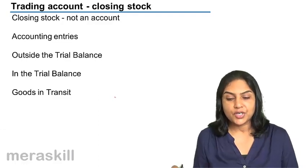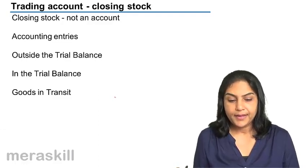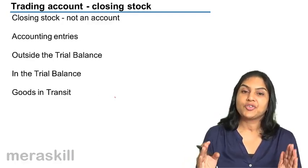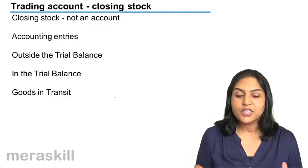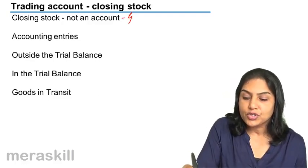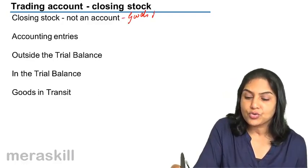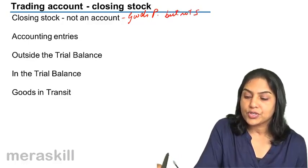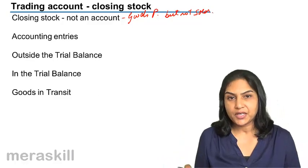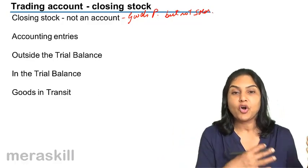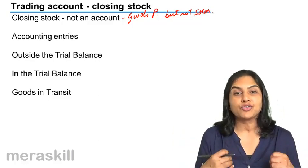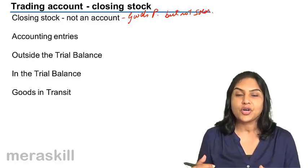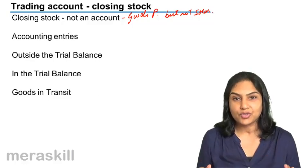Now, closing stock. What is closing stock? Closing stock is not actually a ledger account. Closing stock is goods purchased and not sold. At the end of the year, suppose in our example, 5000 units were purchased and we sell only 4000 units — there is a remaining stock balance of 1000 units.